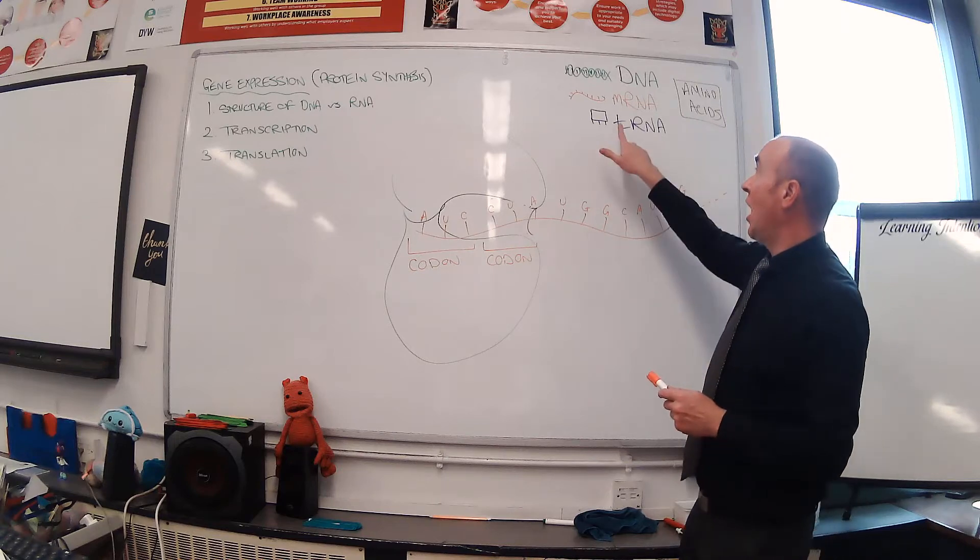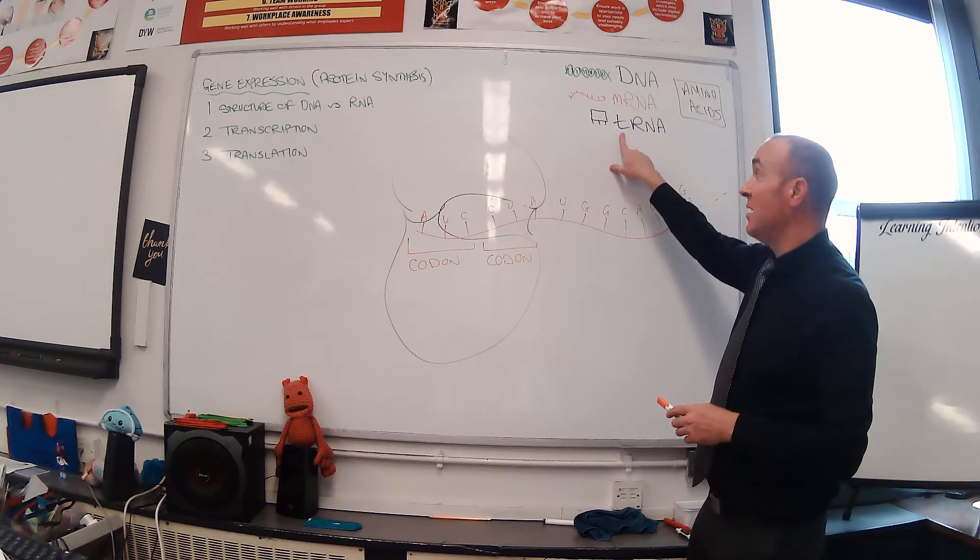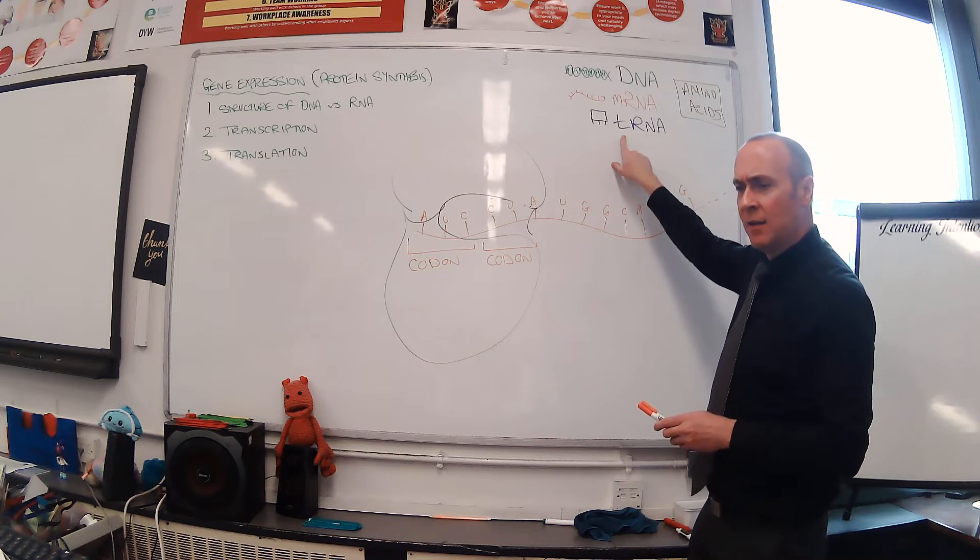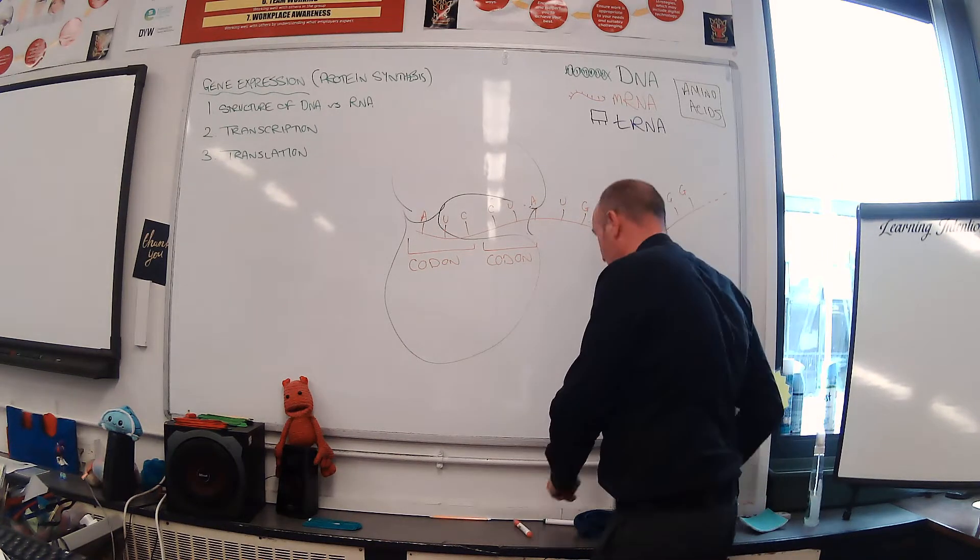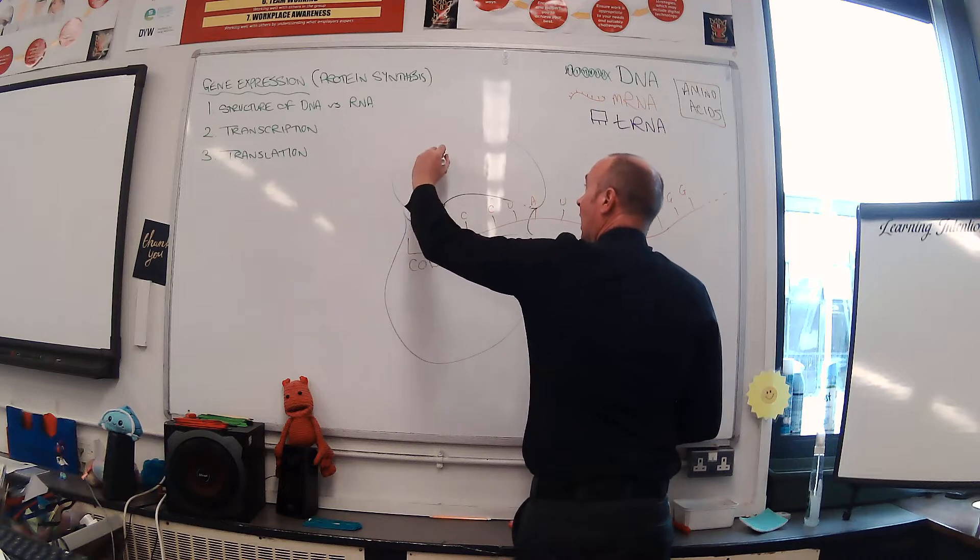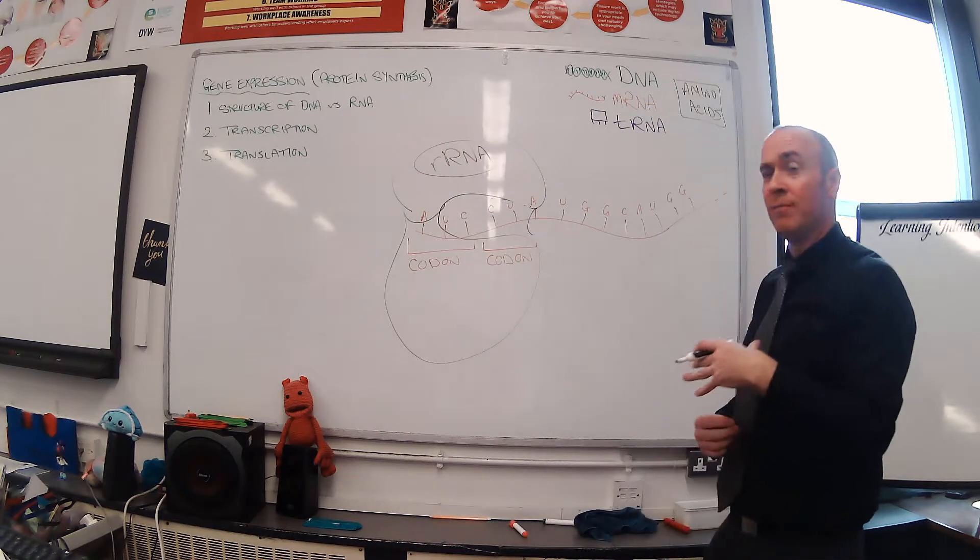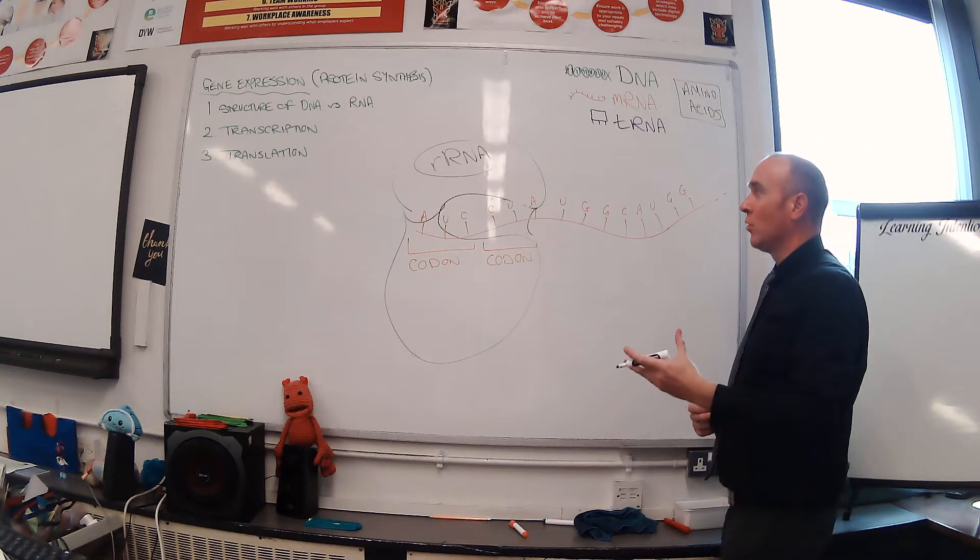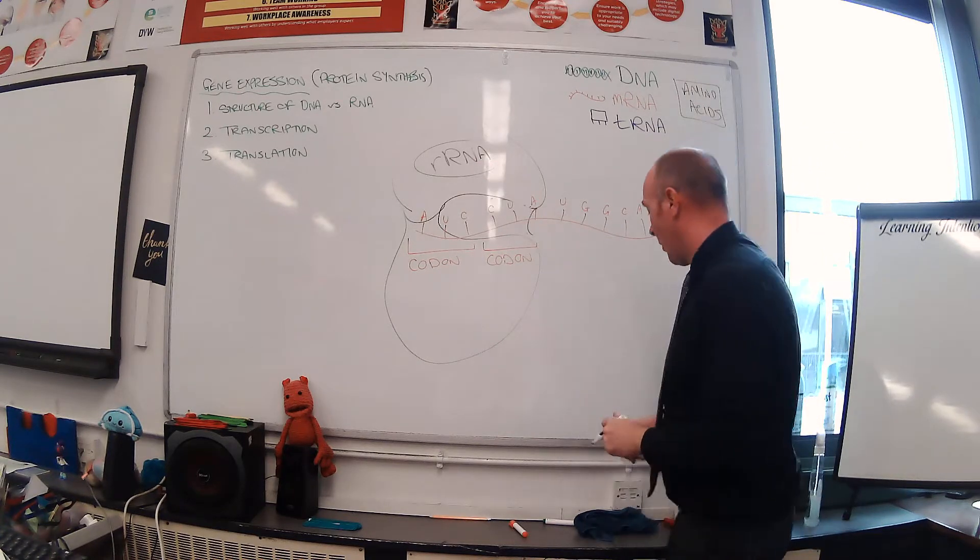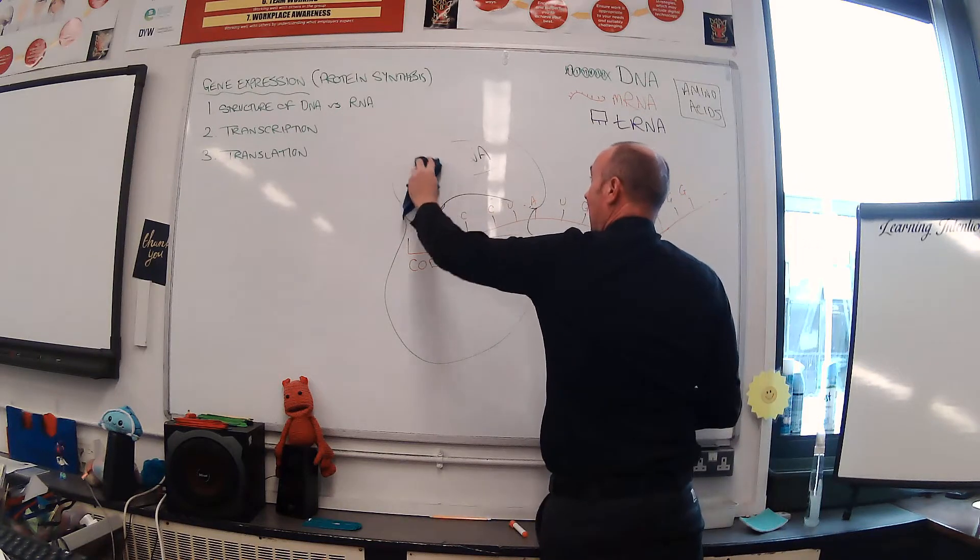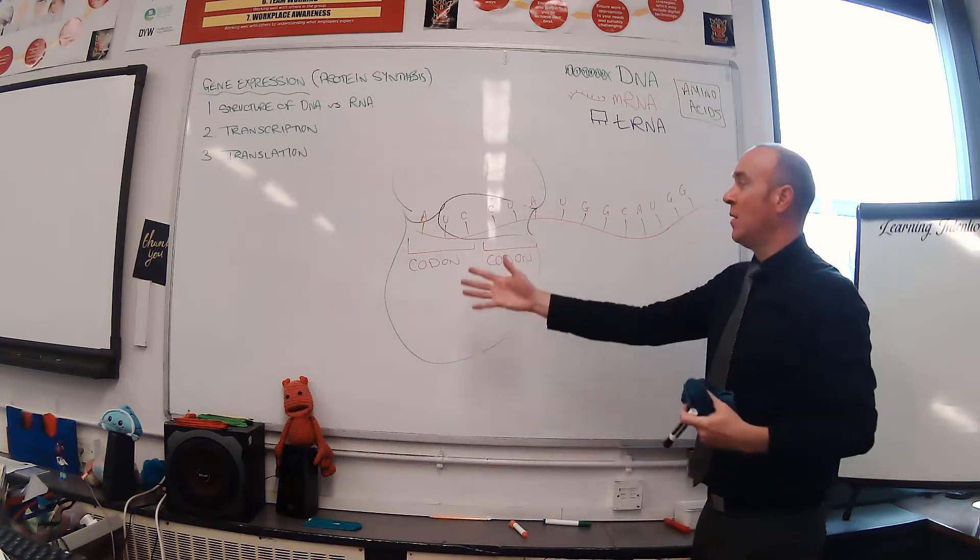So a codon is three bases, a triplet of bases on mRNA. This is where we will introduce our third type of RNA. rRNA is found as part of the ribosome. What we're really going to discuss in depth is the interaction of mRNA and this purple coded type of RNA called tRNA.